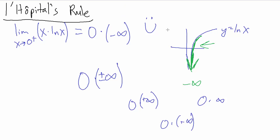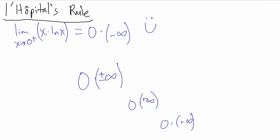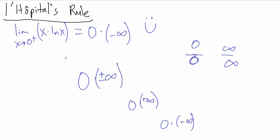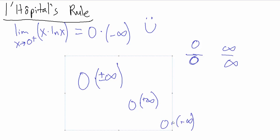But we can't use L'Hôpital's rule immediately, because we didn't get the indeterminate form 0 over 0 or infinity over infinity. We can only use L'Hôpital's rule directly if we get one of those, which we didn't. But what we can do is perform some algebraic manipulations so that when evaluated by direct substitution, we get one of those forms.